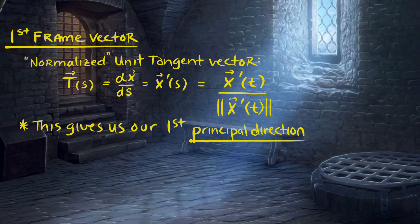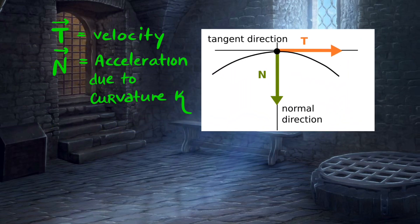The first frame basis vector we need is the unit tangent vector T. A unit tangent vector is normalized by making its length one, which we do by dividing out by the length of that tangent vector. This also defines our first principal direction. Next we need another unit vector perpendicular to T.